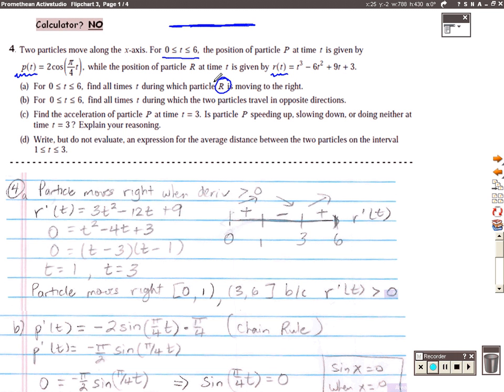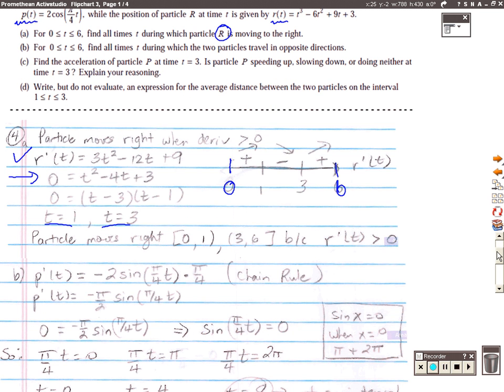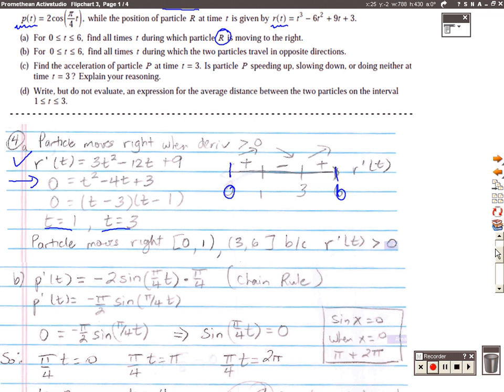Question A: find all times during the given time interval at which particle R is moving to the right. If we have R's position and want to know when he's moving right or left, we need his velocity. So in part A you can see I'm finding the first derivative of the position to get velocity. I'm setting the first derivative equal to zero. Those are my critical numbers that I'm putting on a number line. Notice that I'm starting my number line at zero and stopping at six because that's the only period of time I'm to consider. I'm choosing values in those intervals, substituting them into my velocity function, and determining positive, negative, increase, decrease, right, left. So you can see from the number line that the particle is moving to the right from zero to one and from three to six because the velocity is positive.